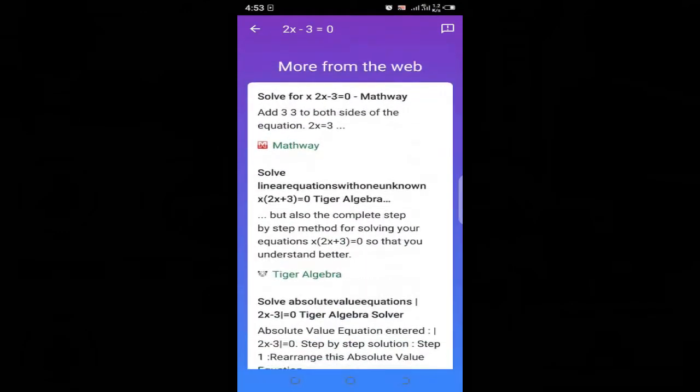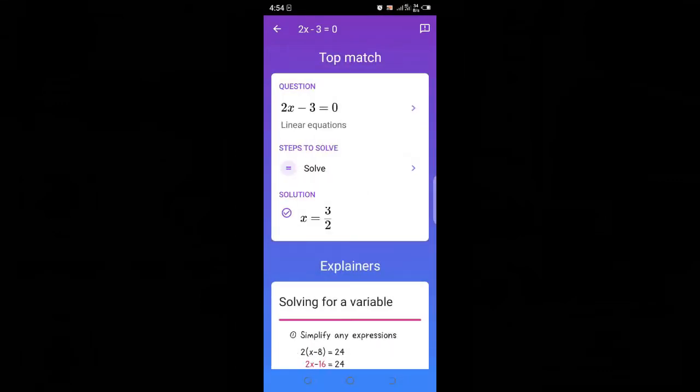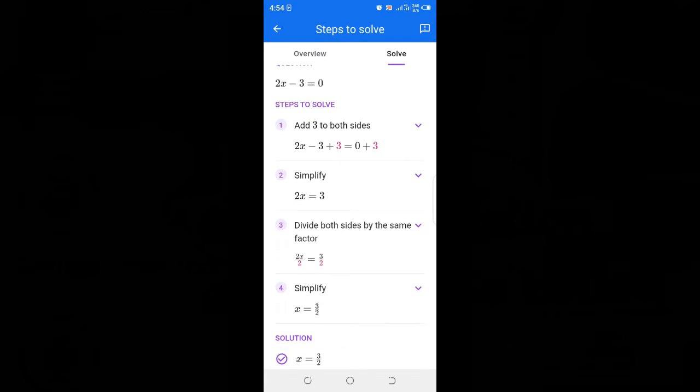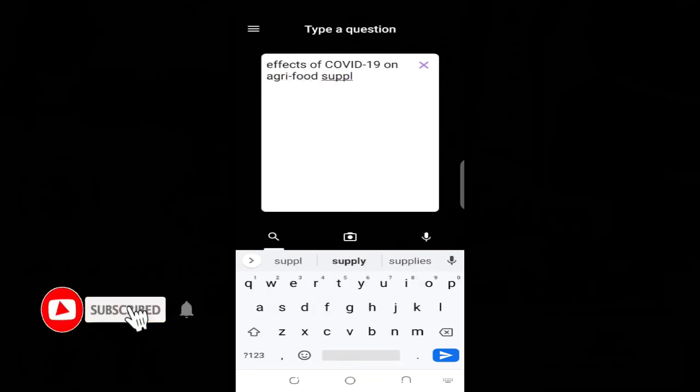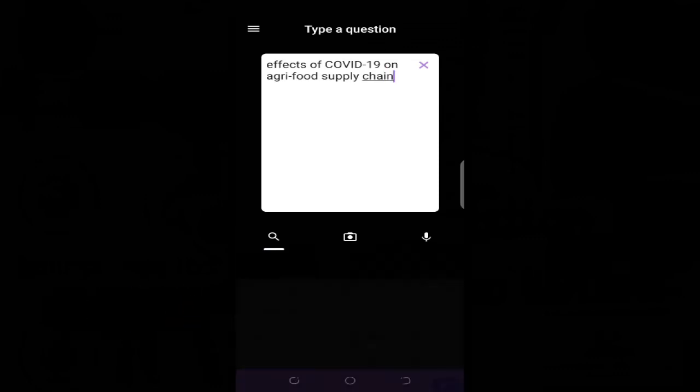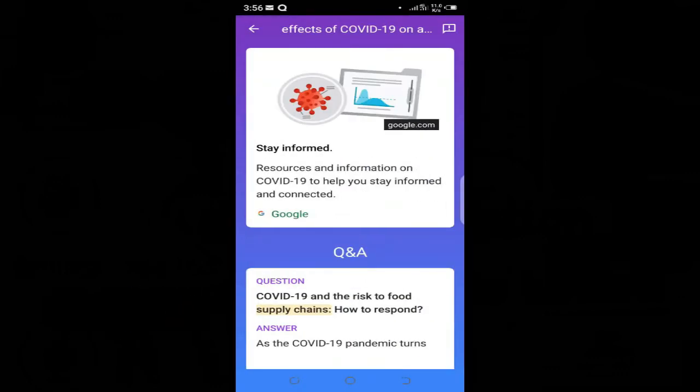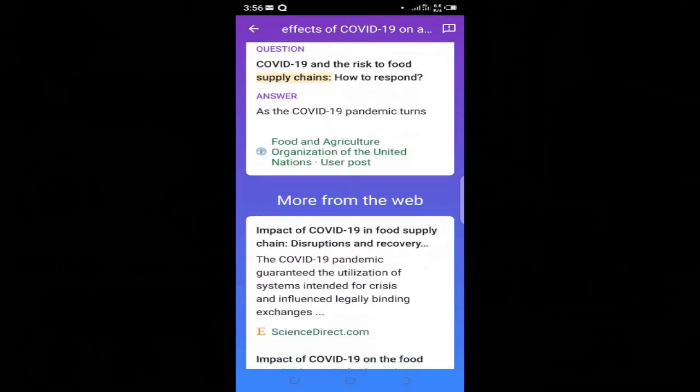Meanwhile, you should know that Socratic by Google is also useful for non-science students, if I may put it that way. Using the search icon, we can search for answers for effect of COVID-19 on agri-food supply chain. Look at all the excellent results over here. Don't we all think Socratic by Google app is cool?